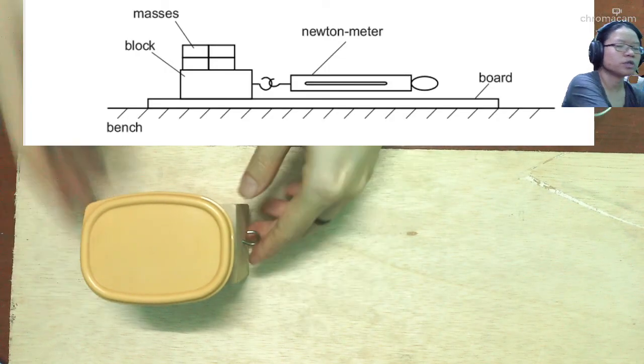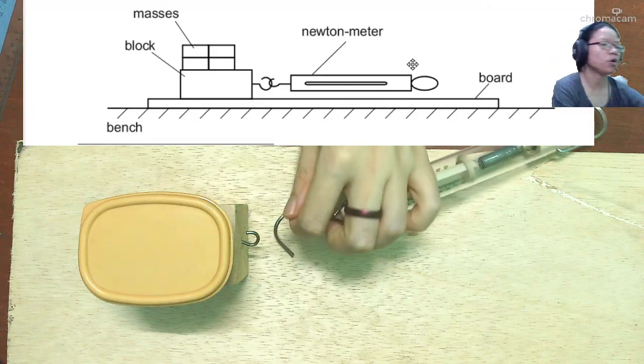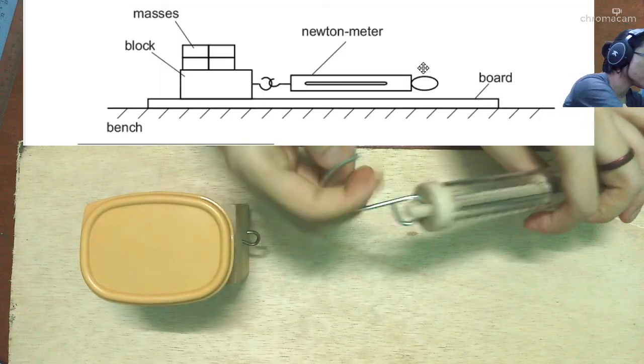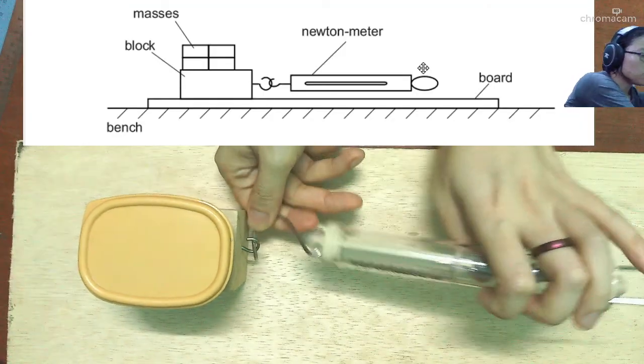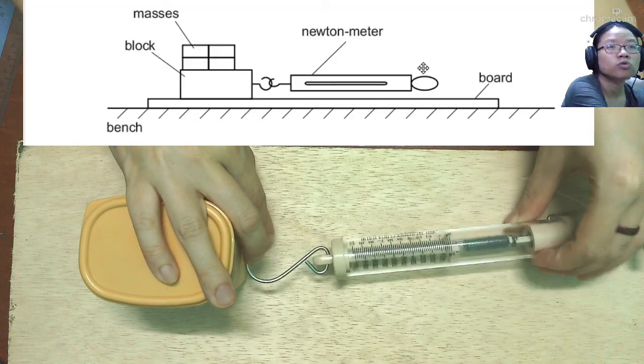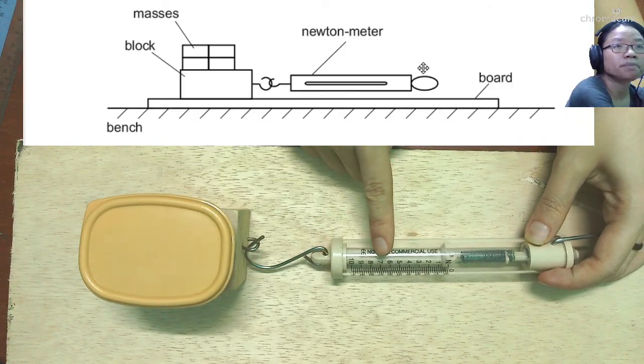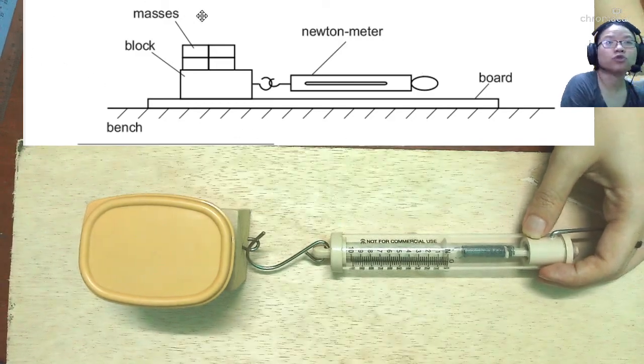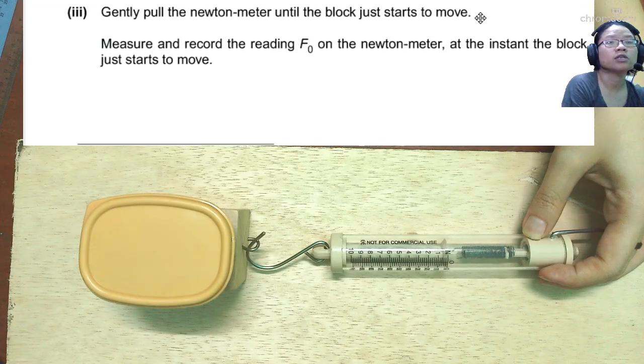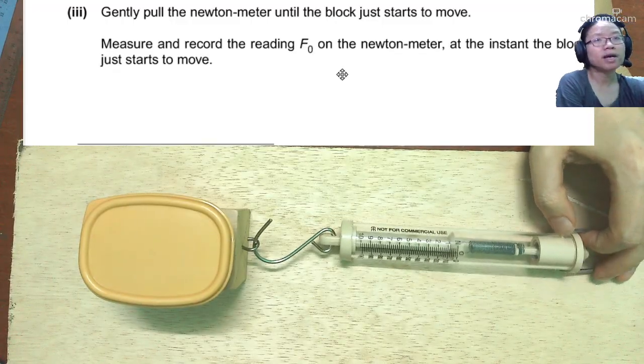So now what we're going to do is the first part of the experiment, which is to place this setup on the flat board. Hook this one over. I'm just going to try and make sure that you can read the value of N. So hook this one in and we will now read the Newton part, not the gram part. We're going to have to drag this until it begins to move. Gently pull the Newton meter until the block starts to move and measure and record F naught.